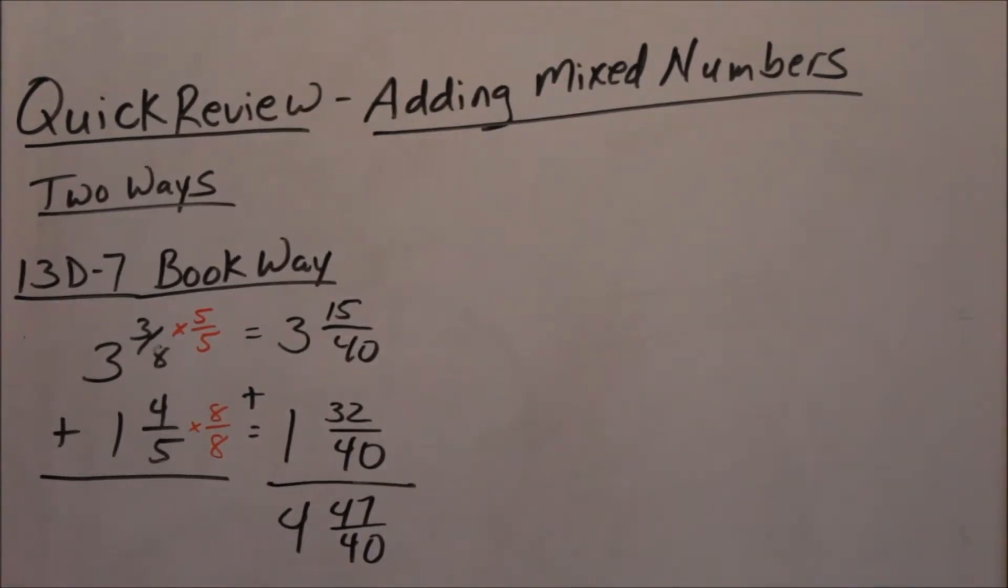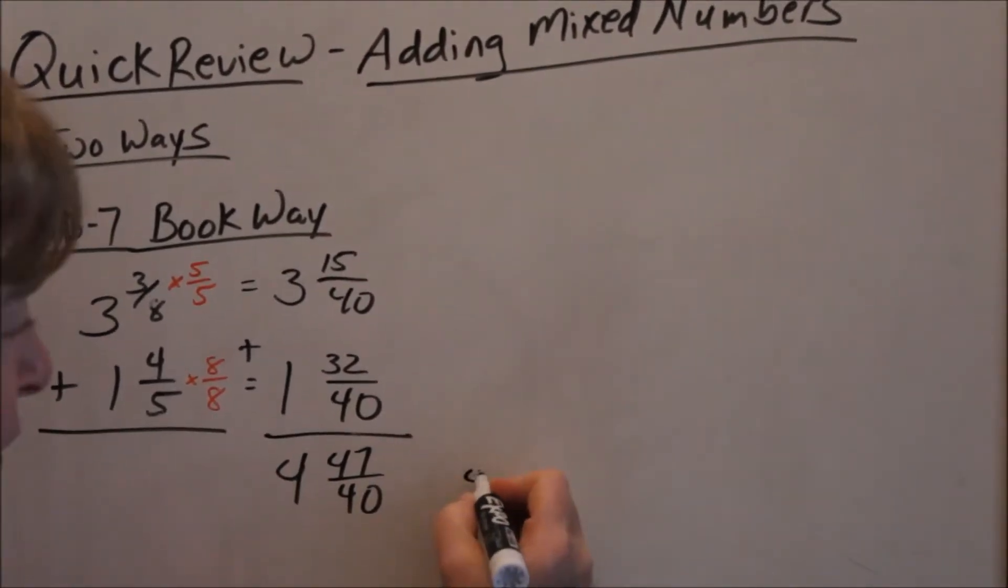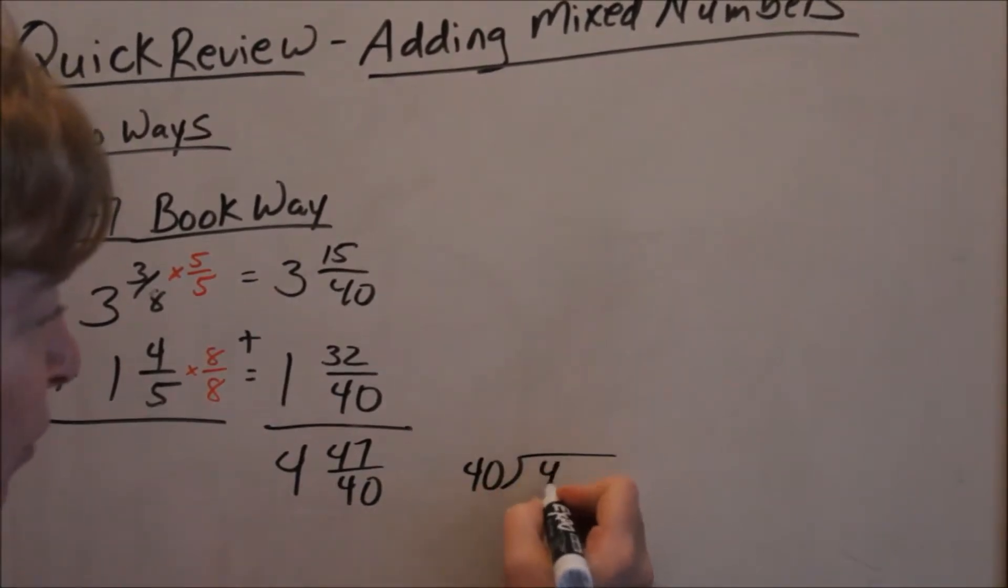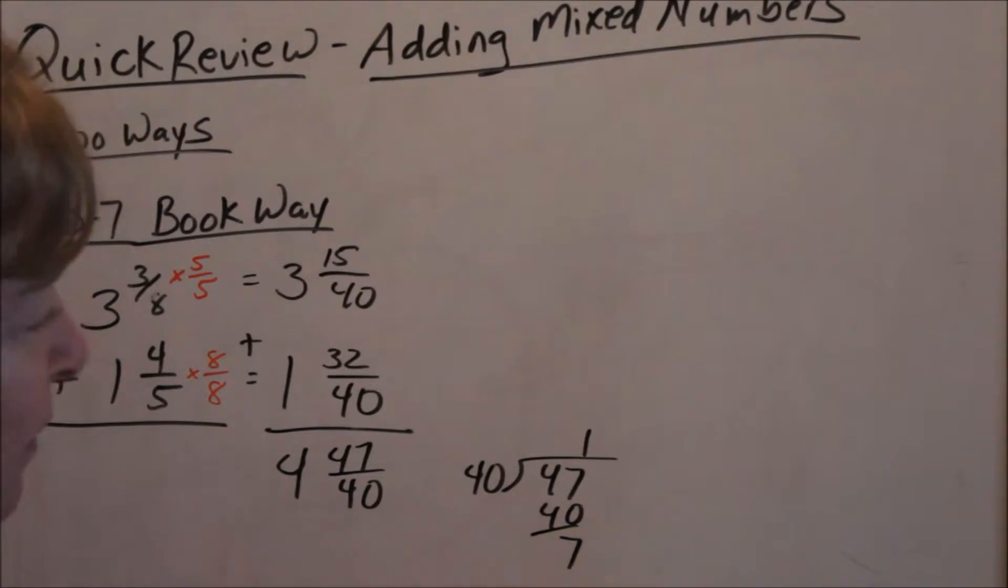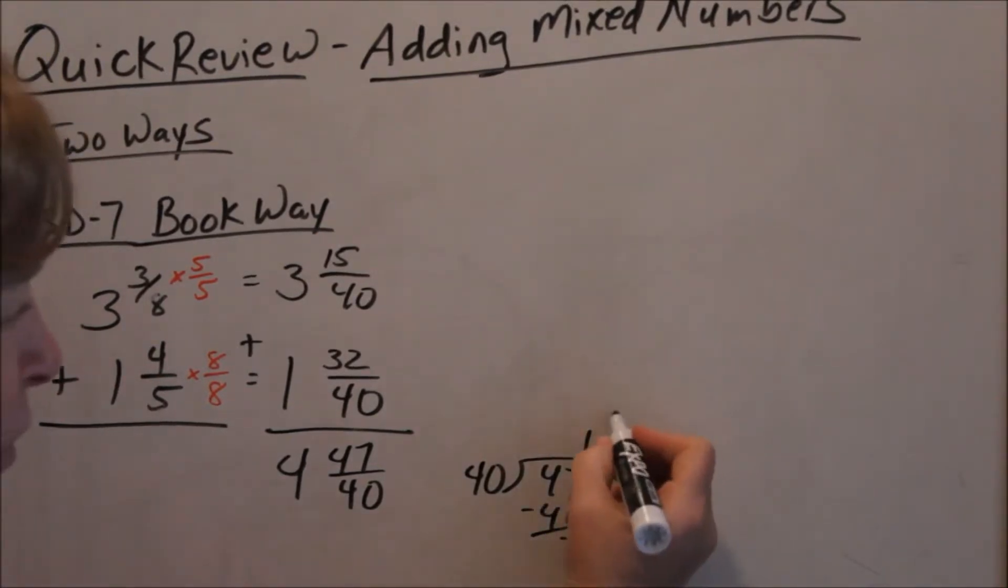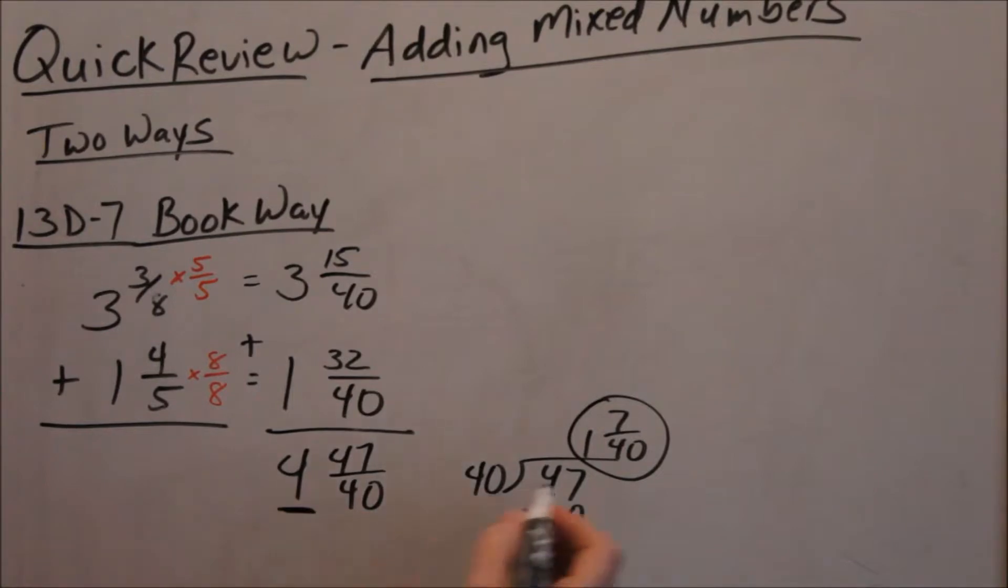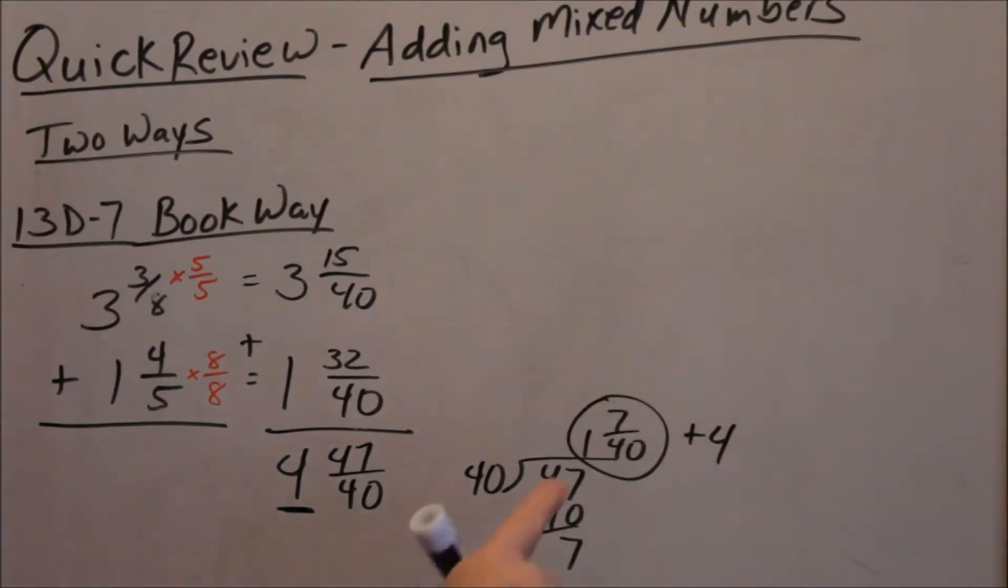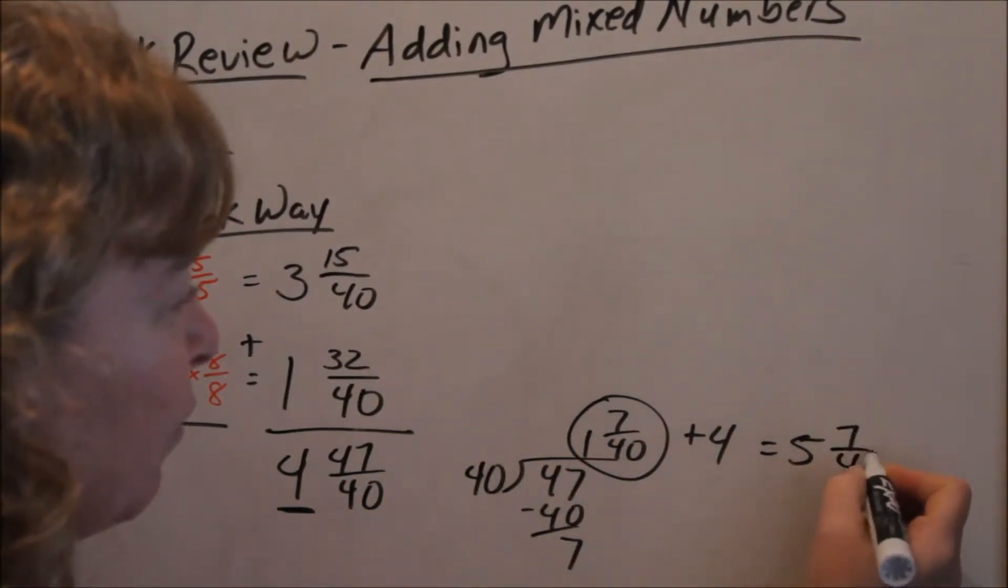47 over 40, same thing as doing 40 into 47 goes one time with a 7 remainder. And that becomes your new numerator. That's always the same denominator. So we take this and add it to the 4. So then adding my whole numbers together, 1 plus 4 is 5 and 7 fortieths.